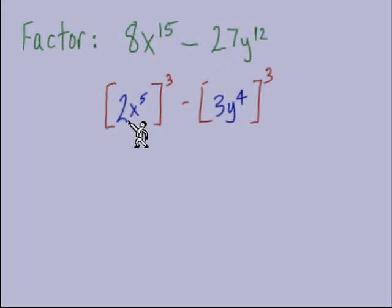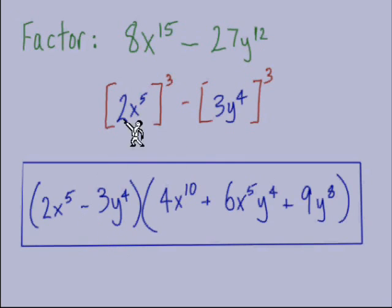Okay, I've set up boxes with exponents of 3. Inside the first box, I needed 2x to the fifth. That's what we need to the third power will equal 8x to the 15th. In the second box, it's a 3 to the third power for the 27. And y to the fourth to the third power would end up at y twelfth. So that's what we have in our boxes.